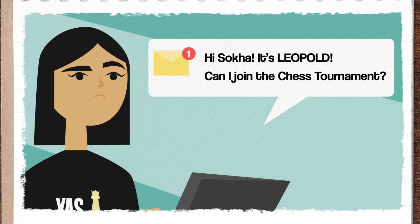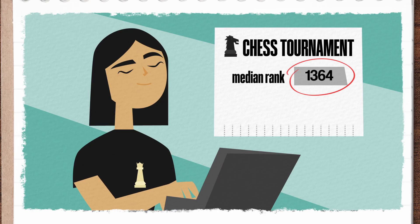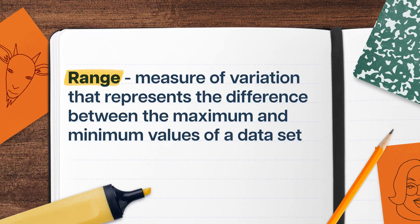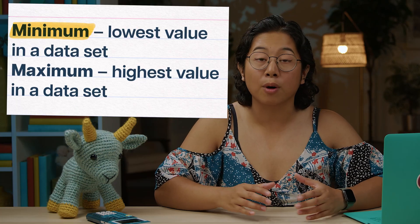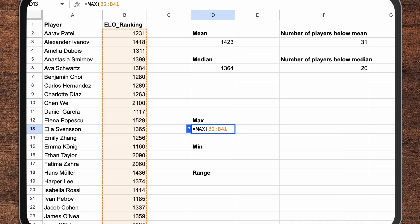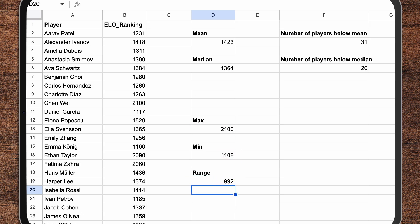She receives an email from a new player — my good friend Leopold — who is interested in joining the tournament. Leopold's ranking of 1200 falls pretty short of the advertised 1364 median ranking, and he wants to know if it would still be worth his time to join. Suka knows that at least five of her existing players have rankings lower than Leopold's, and realizes that advertising only the median rank glosses over the true variety of skill across players. So she creates a new flyer that includes a range. In statistics, a range tells you the total span of values in the data — you simply subtract the minimum value from the maximum value. Using the MIN and MAX functions in spreadsheet software gives Suka a maximum of 2100 and a minimum of 1108, giving her a range of just under 1000.